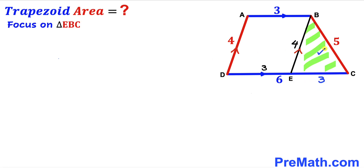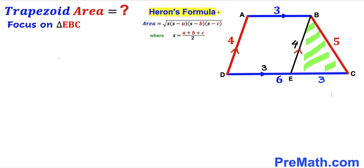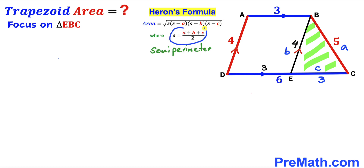Now let's focus on triangle EBC whose side lengths are 3, 4, and 5 respectively, and calculate its area using Heron's formula. Labeling the sides lowercase a, b, and c, the area equals the square root of s(s−a)(s−b)(s−c), where s equals (a+b+c)/2 — the semi-perimeter.